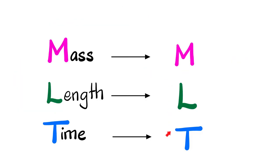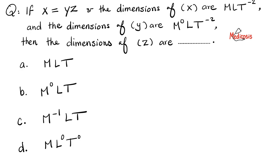Now let's turn everything into MLT units, but first let's practice some math. If x equals y times z, and the dimensions of x are MLT to the power of negative 2, and the dimensions of y are M to the power of 0, L times T to the negative second power — then what are the dimensions of z? Please pause the video and try to solve this yourself.